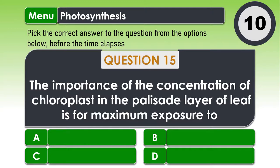The last question, Question 15. The importance of the concentration of chloroplast in the palisade layer of leaf is for maximum exposure to A. Carbon dioxide B. Oxygen C. Water and D. Light.